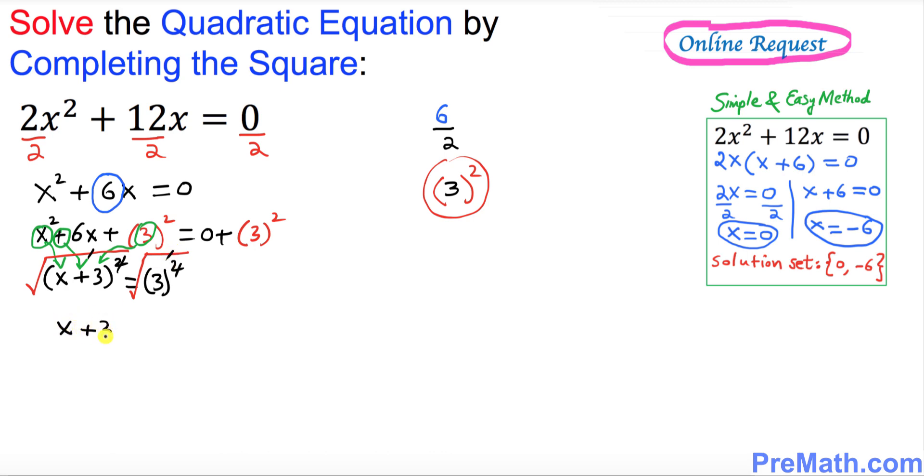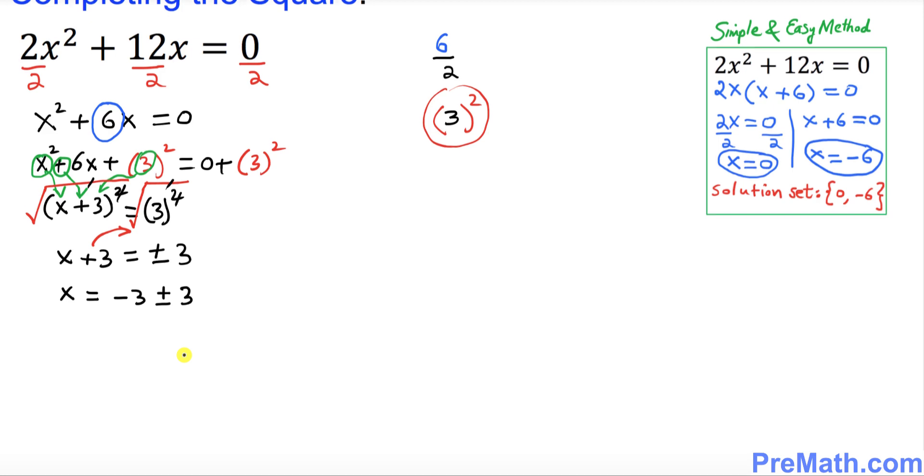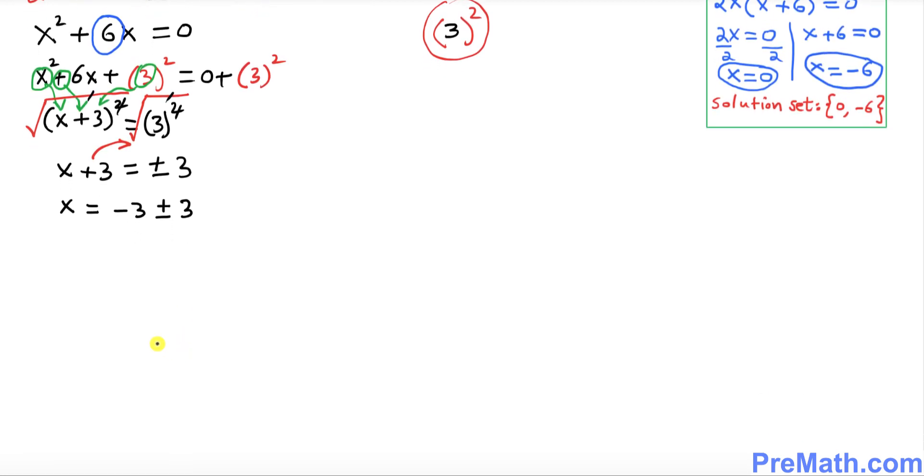Now I want you to move this positive 3 on the other side, so we got x equal to—when you move this positive 3 on the other side it becomes negative 3 plus or minus 3. So far so good.